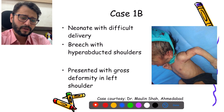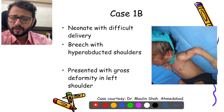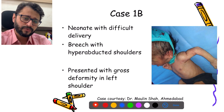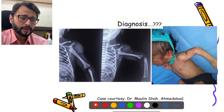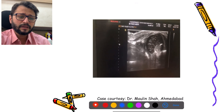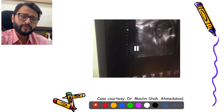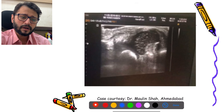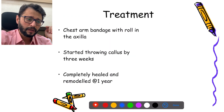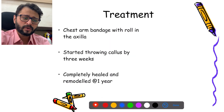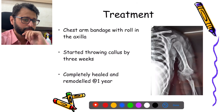This is another case — a neonate with a difficult breach delivery with hyper-abducted shoulders, presenting with gross deformity in the left shoulder. I want to acknowledge Dr. Malin Shah, my colleague, with this case. Again reported as a shoulder dislocation. But it is actually a transphysial injury of the proximal humerus — the shaft is displaced away from where the humerus articulates with the glenoid. Treatment is just conservative: chest-arm bandage with a roll in the axilla.